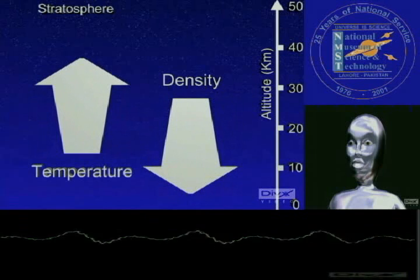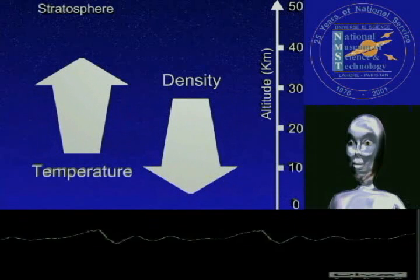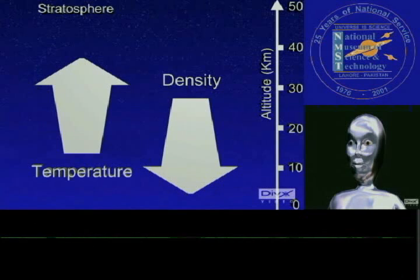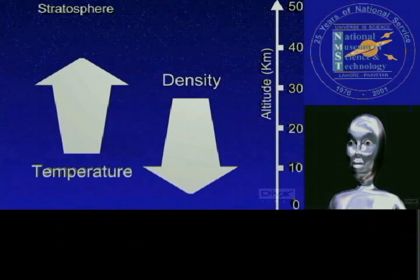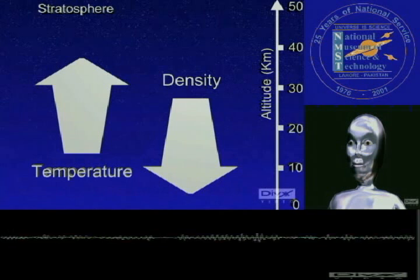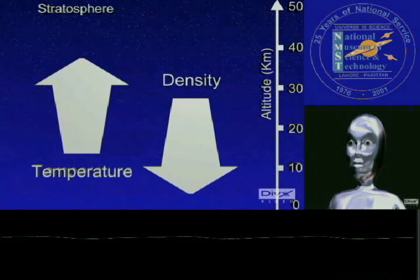The temperature in this region increases gradually to minus 3 degrees Celsius due to the absorption of ultraviolet radiation. The ozone layer which absorbs and scatters the sun's ultraviolet radiation is present in this layer. 99% of air is located in the troposphere and stratosphere.